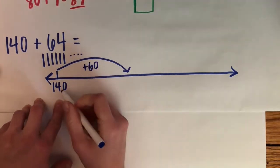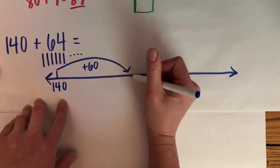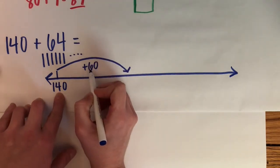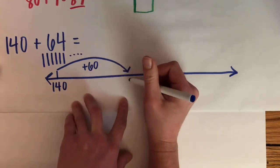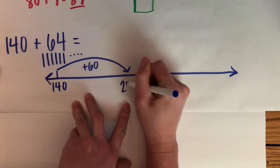Because I know that 6 + 4 = 10, or in this case 60 + 40, because I'm looking at my tens place, equals 100. So I know that 140 + 60 = 200.